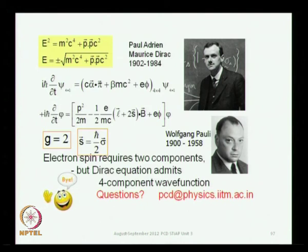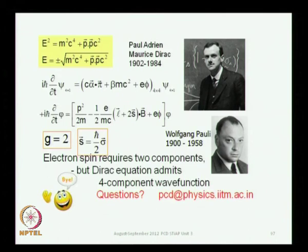In the next class, we will continue our discussion on the Foldy-Wouthuysen transformation — first for the free electron, then for the electron in an electromagnetic field, and ultimately for the electron in the hydrogen atom.